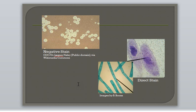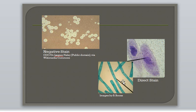Here are examples of simple stains. Notice in the negative stain image, the background has retained the dark color of the stain, whereas the bacteria is still lighter and unstained. In the direct stains, the specimens have picked up the stain and become colored. The background remains lighter and unstained.